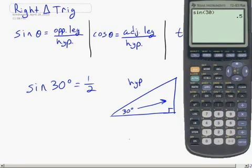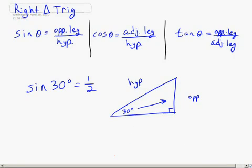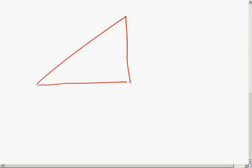That's a little bit about the why. I want to focus more on the how. How do we use this to solve for missing values in right triangles? We've got to understand what these mean. Given any right triangle, we need to know what we mean by opposite leg, adjacent leg, and hypotenuse.